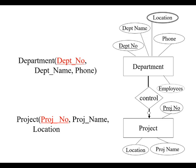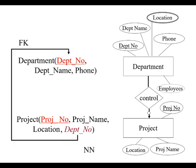Here we have department and project. Using good project management, every project has one department that controls it — otherwise you have a fight. What happens is you add a field here that puts the department number as a foreign key to make sure it relates back, and it should be not null because every project needs somebody in charge of it, otherwise they don't get done.